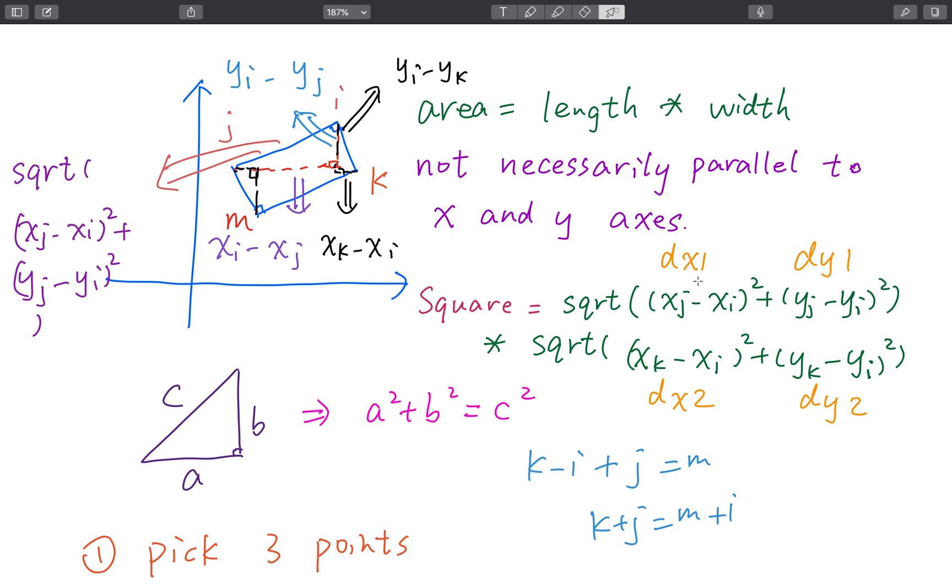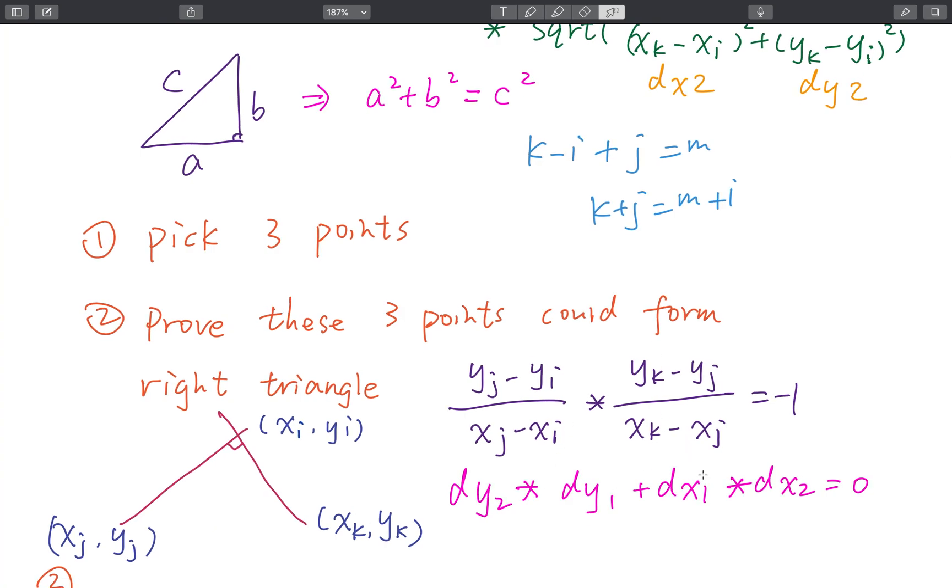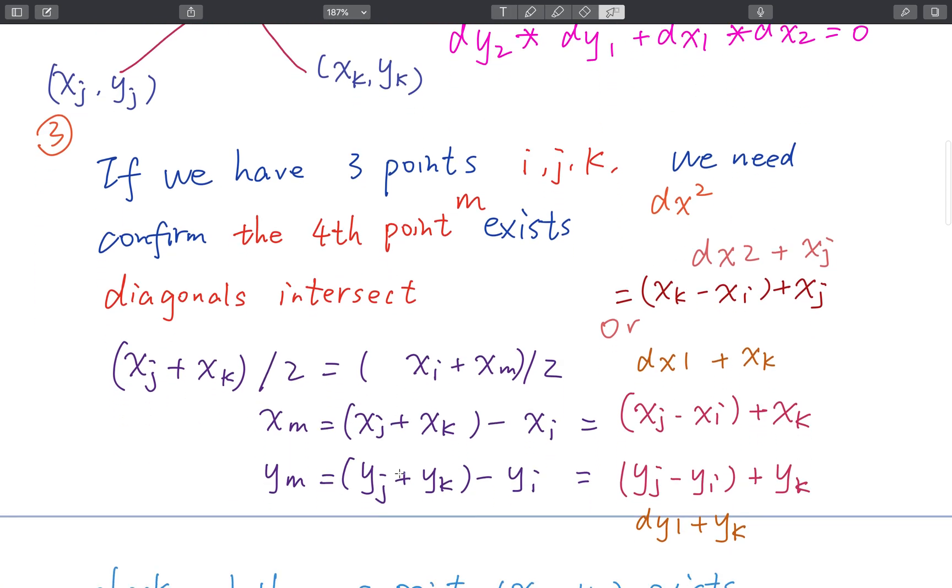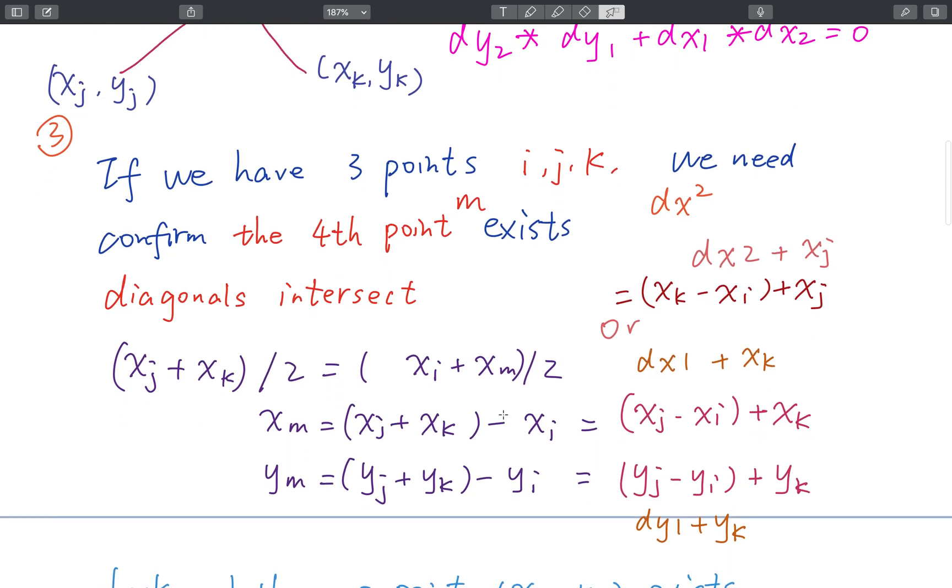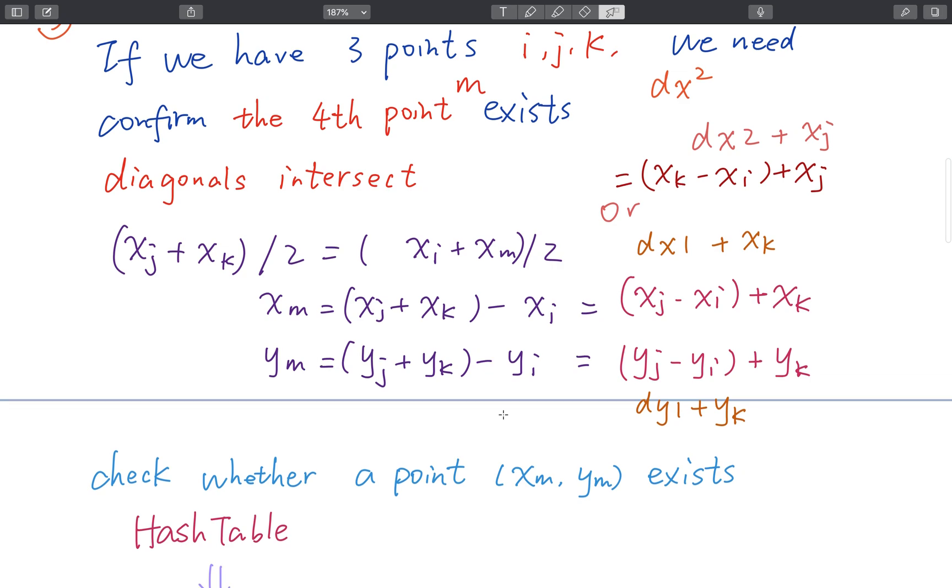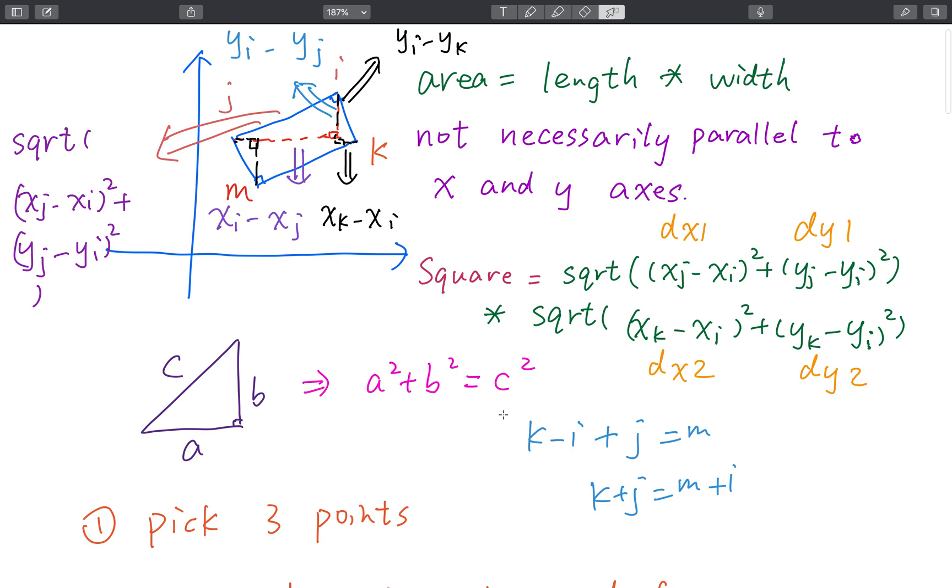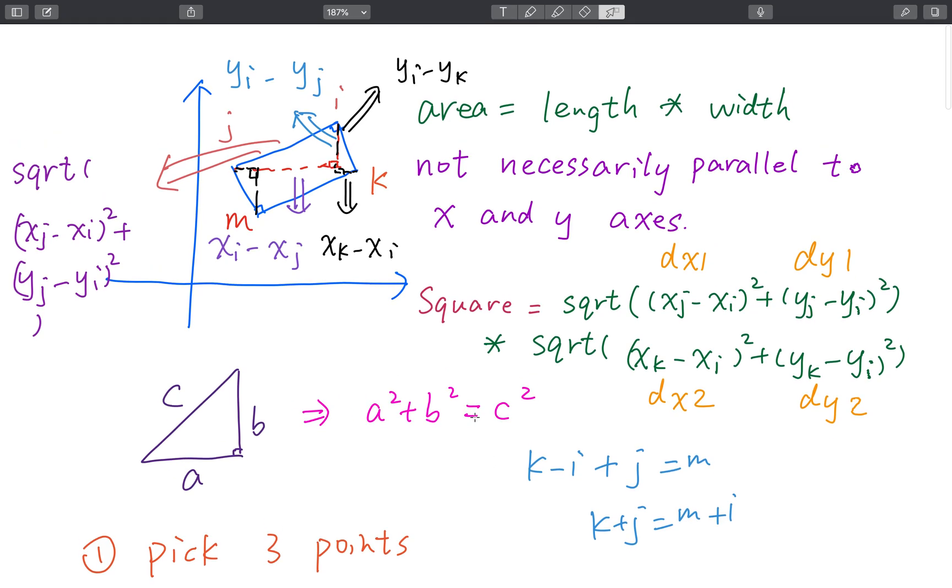So we get a dx1, dx2, dy1, dy2. And if they can form a 90 degree, then we should try to find a fourth point by this formula. If we can find it, calculate their area. And we maintain a global minimum area. Okay, that's it.